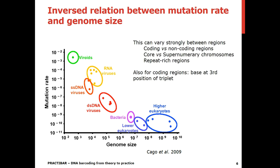For larger genomes, mutation rate can vary strongly between regions — for instance, coding versus non-coding regions, in which the coding regions tend to be more conserved. The same applies for core chromosomes when comparing them to supernumerary chromosomes, which tend to have a higher mutation rate. Also, in repeat-rich regions, higher mutation rates are often observed. Within coding regions, the third base of a triplet, or codon, tends to have a higher mutation rate compared to the other positions in a triplet.